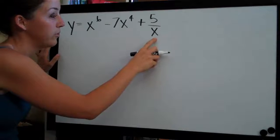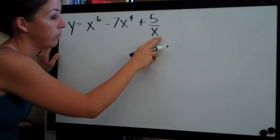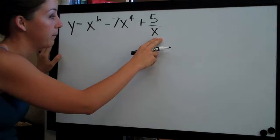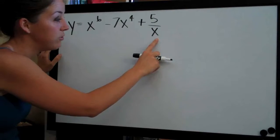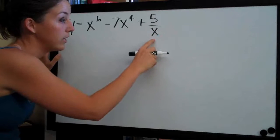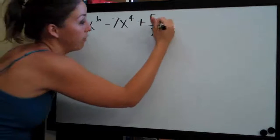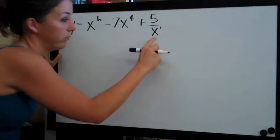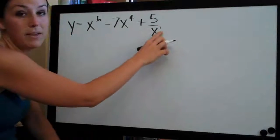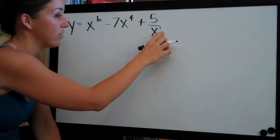So what we'll go ahead and do is focus on this third term and first convert it to something that will be more simple for us to derive, and the way that we're going to do that is by moving x to the numerator. So currently x is raised to the power of 1, right? It's x to the 1 as opposed to x squared or something. We don't write it because it's implied but it's actually x to the 1.